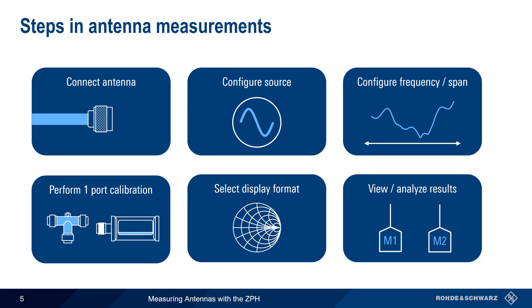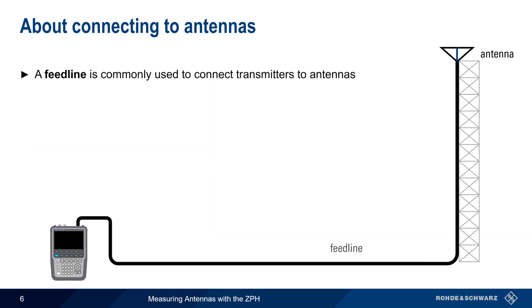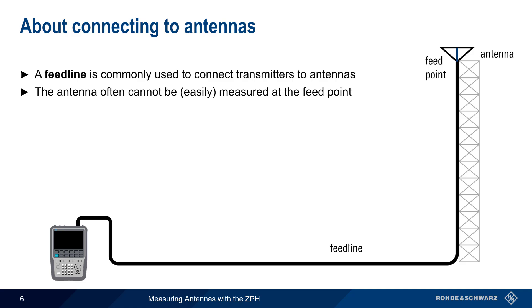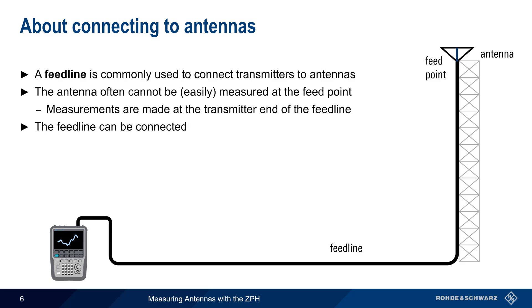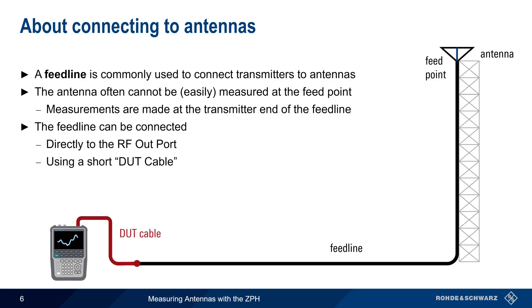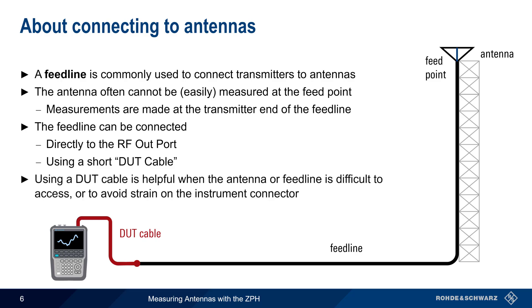Let's start with connecting the antenna. In most cases, a feed line is used to connect a transmitter to an antenna, or more precisely, to the antenna feed point. Because antennas generally work best when they are mounted in high or unobstructed locations, such as on a tower, the feed point may be very difficult to access, and therefore antenna measurements are often made at the transmitter end of the feed line. There are two methods for connecting a feed line to the ZPH: the first is simply connecting the feed line directly to the RF output port; the second is using a short, high-quality DUT or Device Under Test cable. This is often done for ease of attachment or to avoid strain on the instrument connector. Measurement accuracy is unaffected by this DUT cable as long as calibration takes this cable into account.